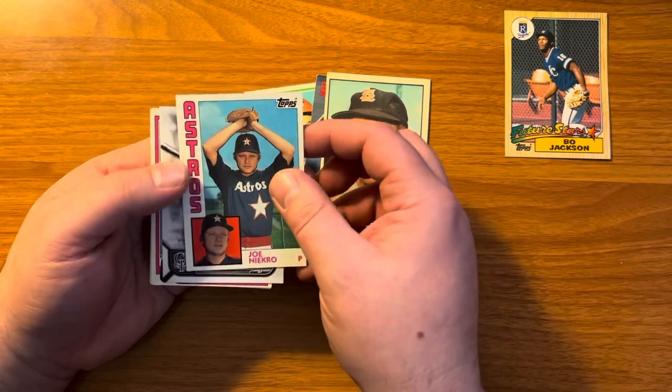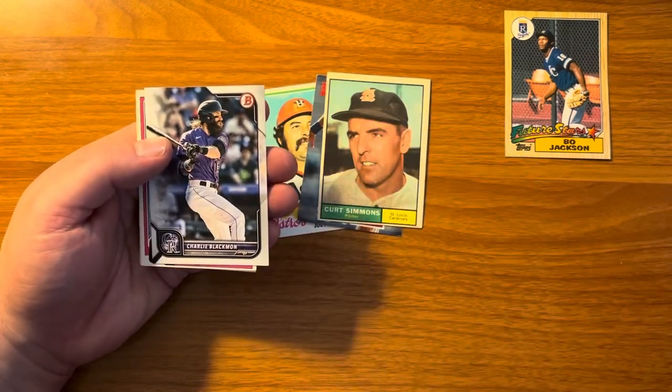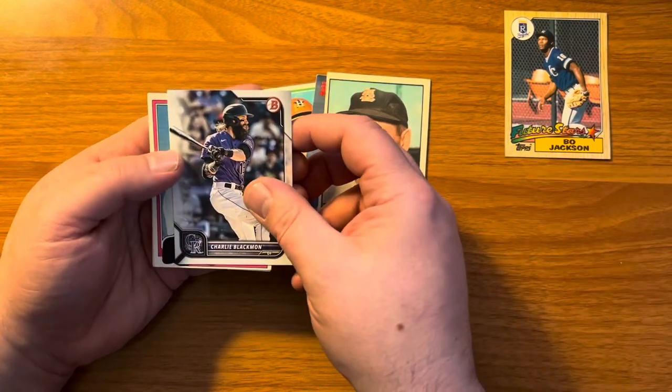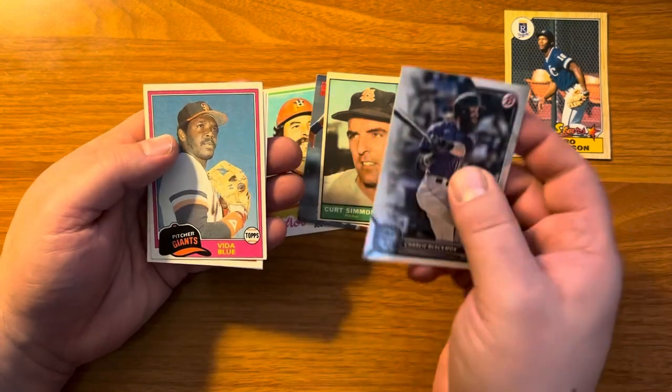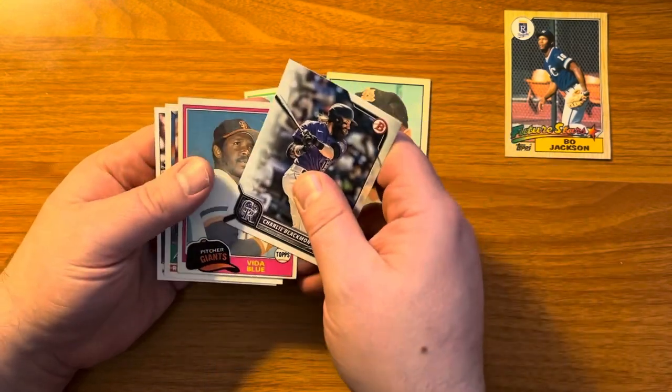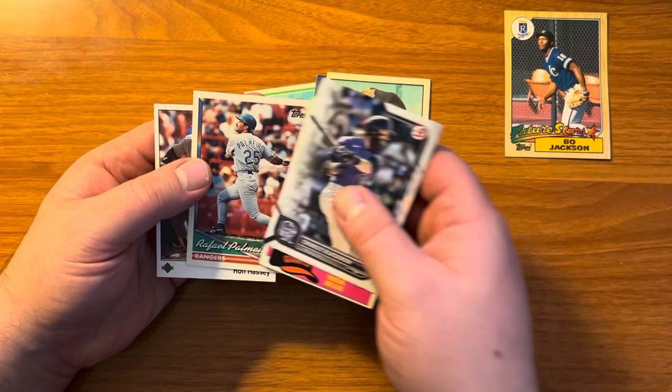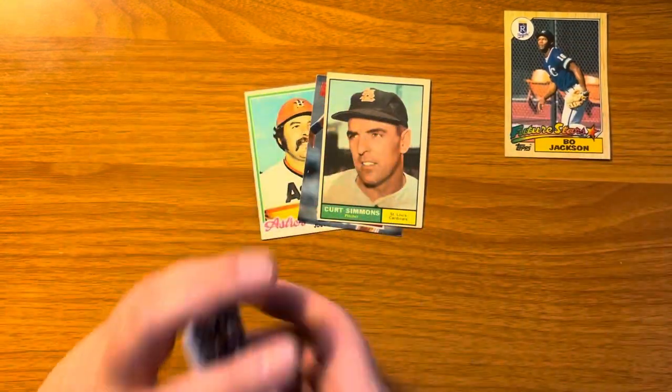Joe Niekro, brother of Phil Niekro. Charlie Blackmon. Colorado Rockies. What year is this here? 2022. So that's relatively new. Vida Blue. Rafael Palmeiro. And we end with Ron Hassey.